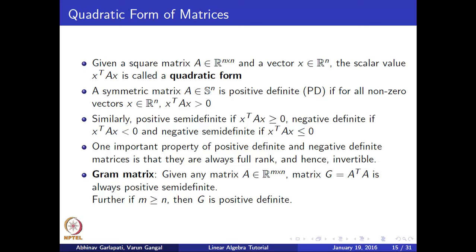For a matrix A of dimension m cross n, one can define a special matrix called the Gram matrix, given by A^T A. The salient property of the Gram matrix is that it is always positive semi-definite. Moreover, if the number of rows exceeds the number of columns — in other words, if m ≥ n — then the Gram matrix G is positive definite.